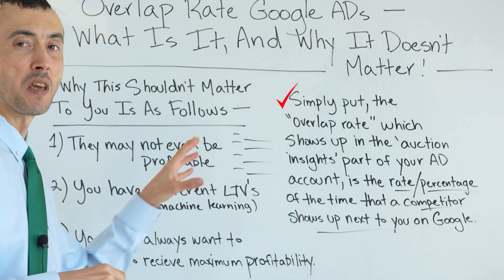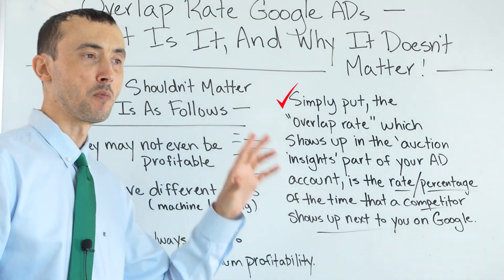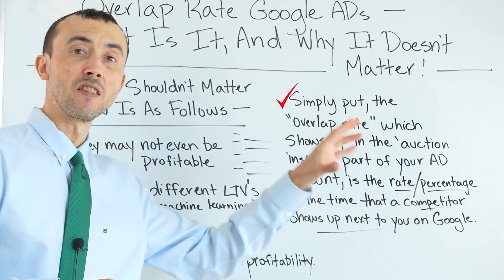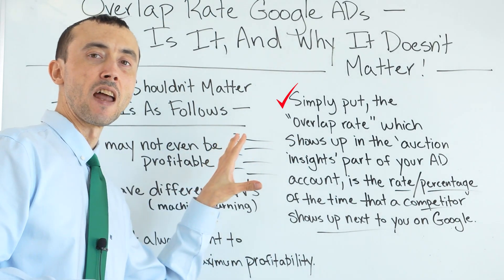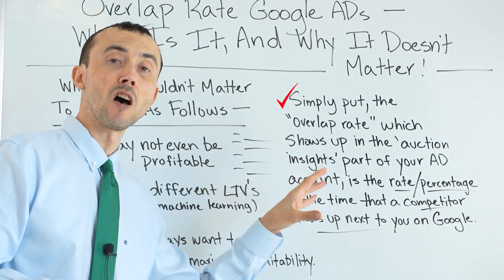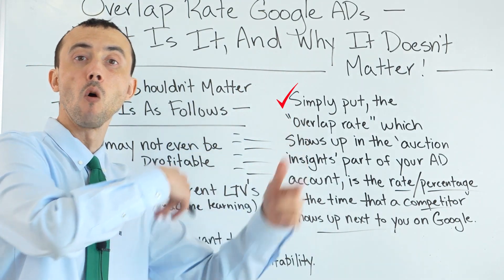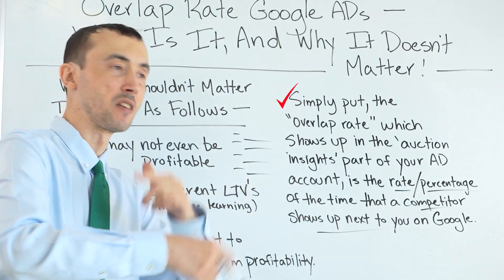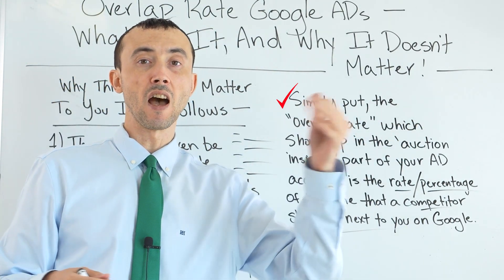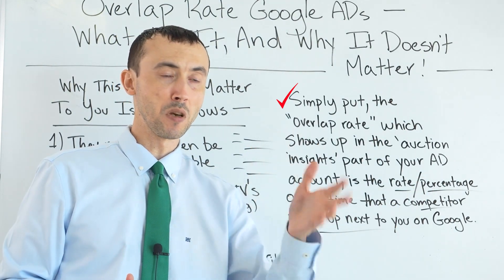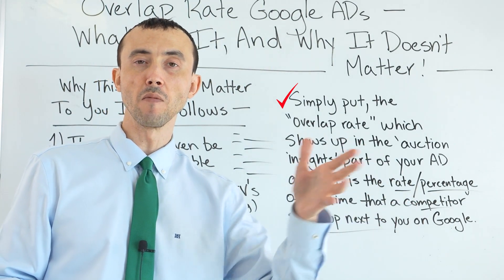Basically, the idea of why Google even shows this overlap rate is because this number, ranging from 0 to 100%, is used to convince you to spend more money so you are always showing up when the competitor shows up. They know a lot of people think, well, if the competitor that's bigger than me is doing it, I should do it — which is a poor way to think, because competitors aren't automatically doing the right thing.